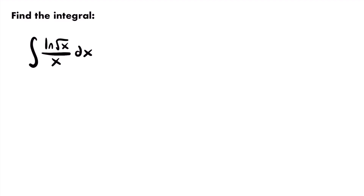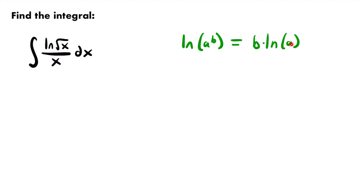What we can do is use the properties of logarithms. In particular, the natural log of a to the power of b equals b times the natural log of a. You can take an exponent inside a logarithmic function and bring it outside as a multiplier, leaving just the base inside the logarithm.